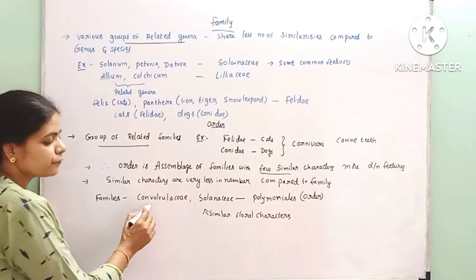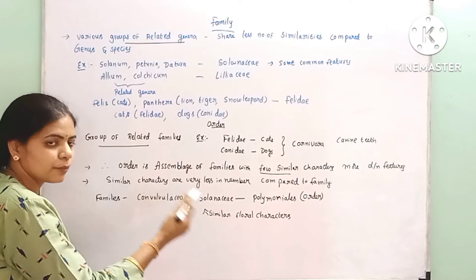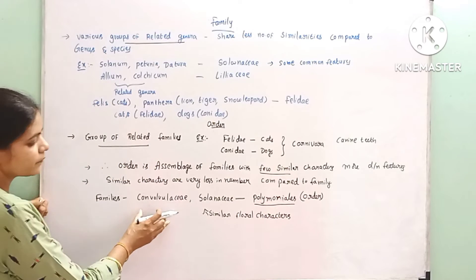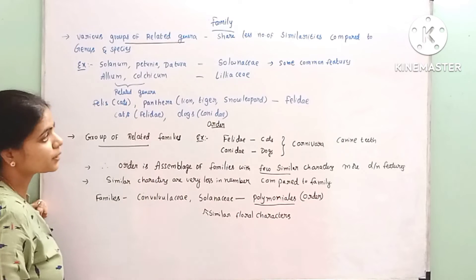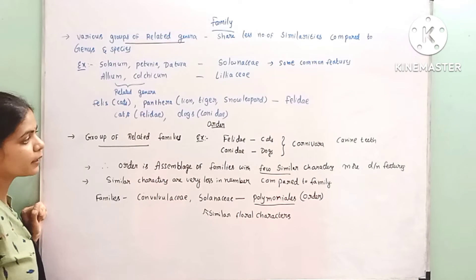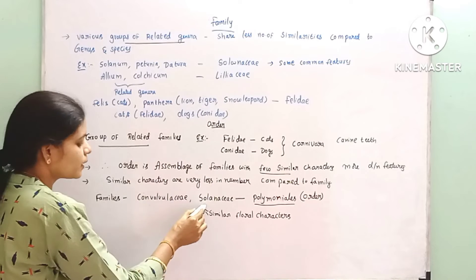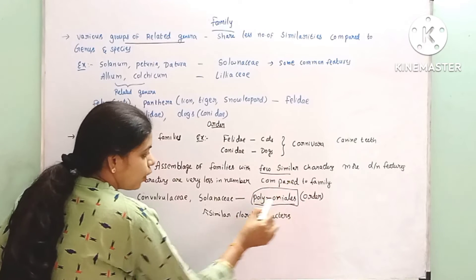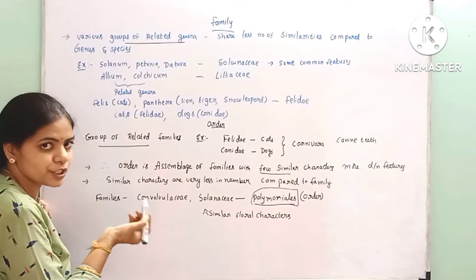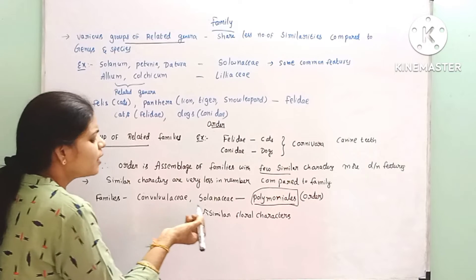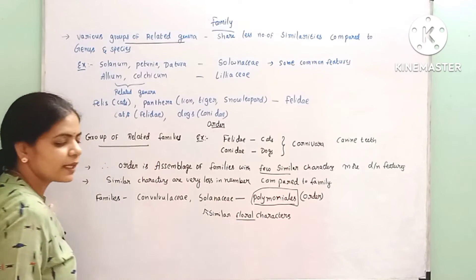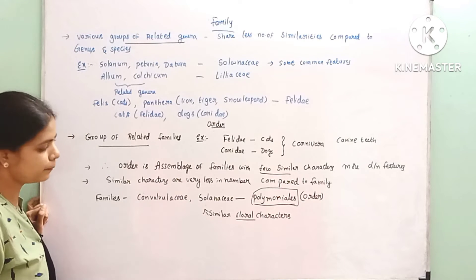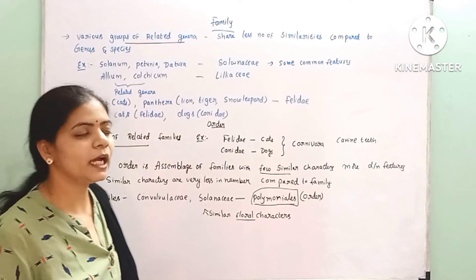So families like Convolvulaceae and Solanaceae — these two or three families are combined and placed under the order Polemoniales. Solanum, Petunia, and Datura are placed in the family Solanaceae, and Solanaceae along with Convolvulaceae are combined and placed under Polemoniales using similar floral characters.